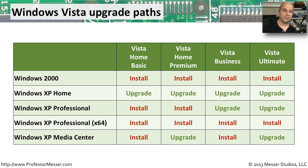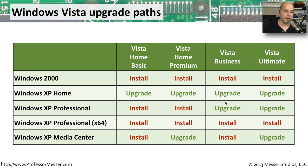When you start looking at upgrading to Windows Vista, there are a lot of other options available because there are different Windows Vista editions: Vista Home Basic and Home Premium, Vista Business, and Vista Ultimate. Some operating systems can't be upgraded at all to Windows Vista. For example, Windows 2000 can't be upgraded — you must perform a clean install. XP Home can be upgraded to any of those editions. XP Professional can only perform an in-place upgrade to Vista Business or Vista Ultimate. Windows XP Professional 64-bit does not provide an upgrade path to Vista in any edition. And if you're running Windows XP Media Center, you can perform an in-place upgrade to Vista Home Premium or Vista Ultimate.